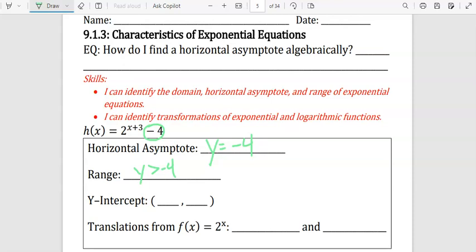The y-intercept, we would plug in 0 for x and evaluate that. So that's going to be 2 times 2 times 2, which is 8, 8 minus 4 equals 4. And the translations from the parent function 2 to the x power: the plus 3 makes it go left 3 and then it goes down 4.